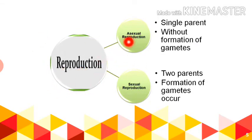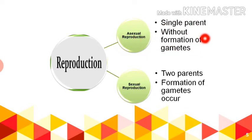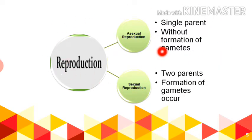Reproduction consists of two types: asexual reproduction and sexual reproduction. In asexual reproduction, only a single parent is involved, while in sexual reproduction two parents are involved. In asexual reproduction there is no need for gametes, while gametes are required in sexual reproduction.